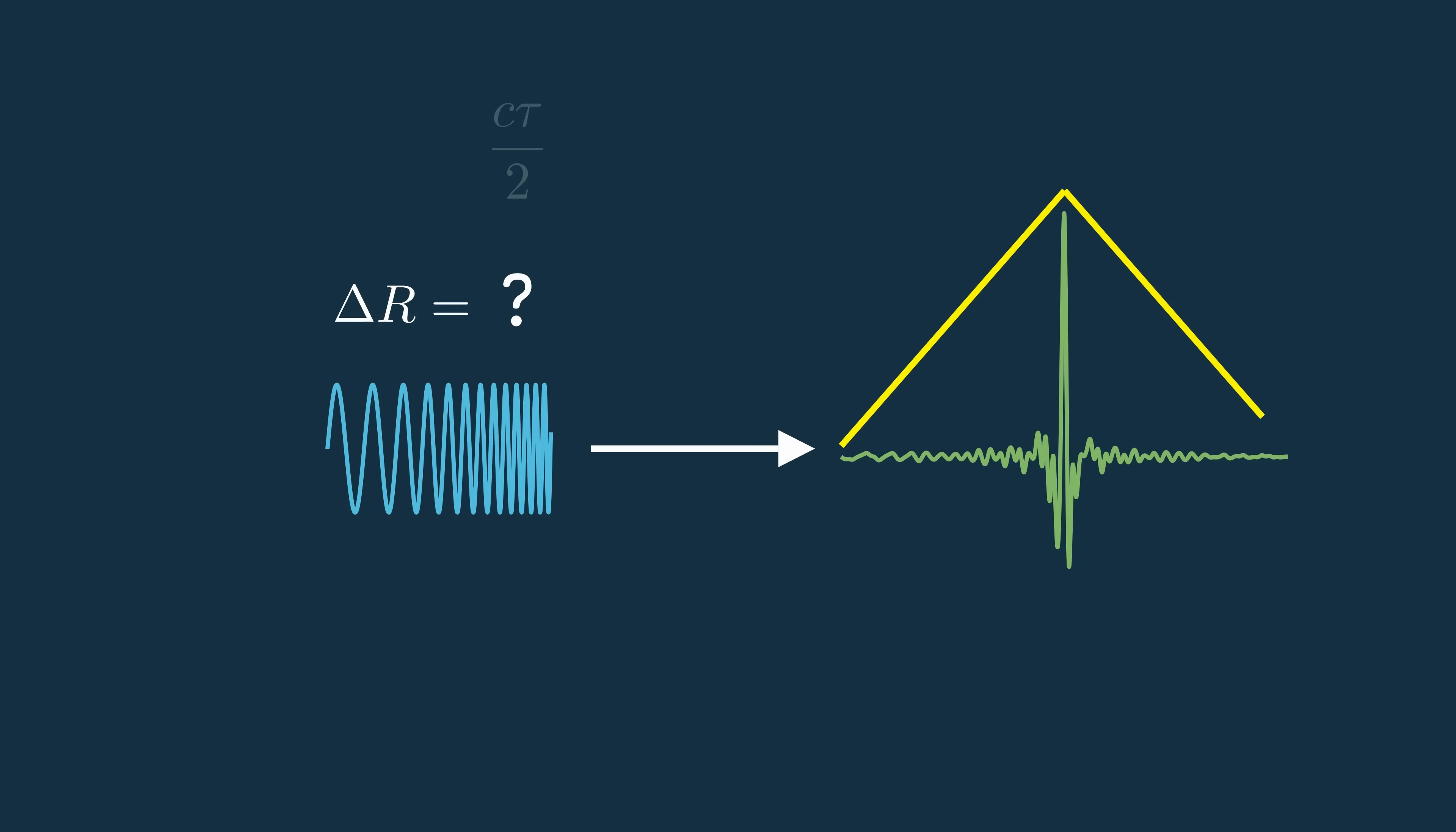The result is that the correlation peak sharpens. Instead of a broad triangular envelope, we get a narrow spike. This is the key, more bandwidth means fewer false alignments as we sweep the transmit pulse over the receive, and that's what gives us the better range resolution.